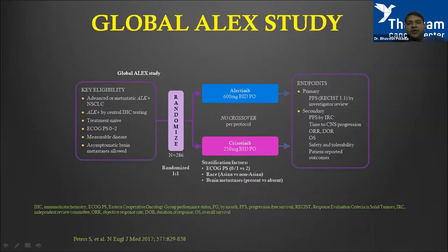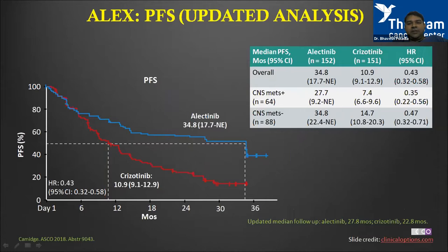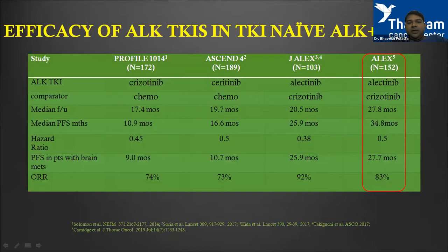PFS was the primary endpoint in ALEX, and the updated analysis showed a staggering difference: crizotinib at 11 months versus alectinib at almost 35 months. Not only in all patients, but also in CNS metastasis patients, there was an improvement from 7 to 27 months. Comparing all TKIs in treatment-naive patients, alectinib is a clear winner with a superior PFS of almost 35 months.